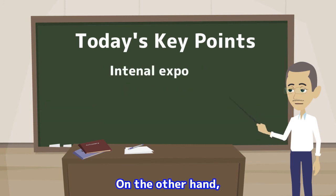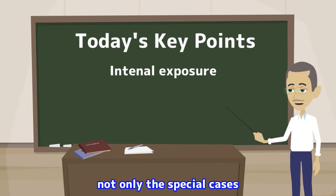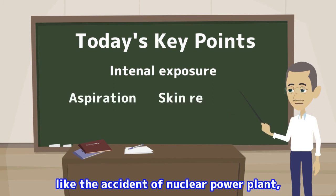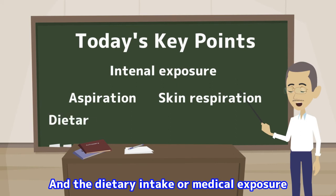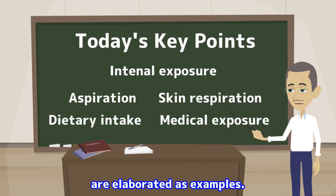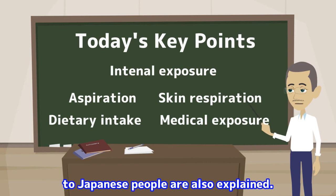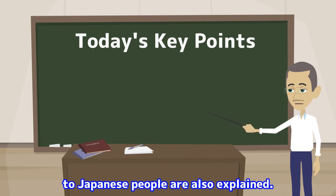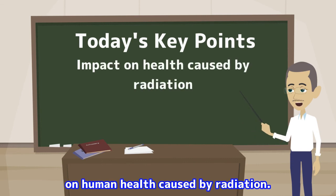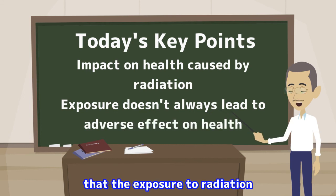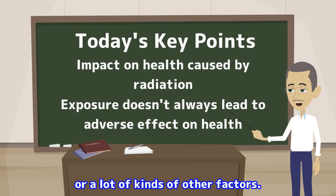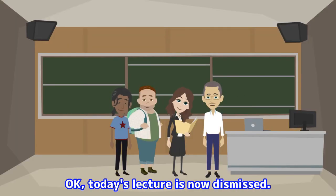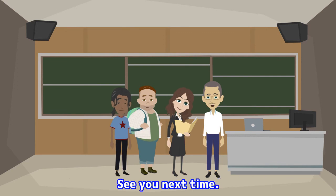On the other hand, regarding internal exposure, not only the special cases like the accident of nuclear power plant, but also aspiration or skin respiration could cause it. And dietary intake or medical exposure are elaborated as examples. The statistics regarding the exposure to Japanese people are also explained. At last, I talked about the impact on human health caused by radiation. I would like to emphasize that the exposure to radiation doesn't always lead to adverse effect on human health — it depends on the quantity and a lot of other factors. Okay, today's lecture is now dismissed. See you next time.